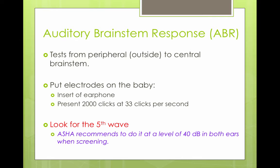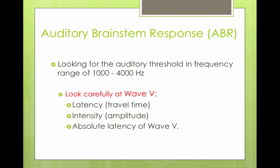What the audiologist is looking for is the fifth wave in response. If you can present clicks and find wave 5 at a level of 40 decibels — putting the stimuli at 40 decibels and seeing wave 5 in both ears — that means the child has normal hearing. You're looking for the auditory threshold in the frequency range of 1,000 to 4,000 hertz, carefully examining wave 5: the latency or travel time, the intensity of that wave (the amplitude), and the absolute latency of wave 5.